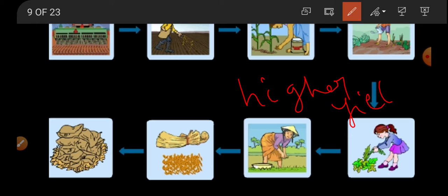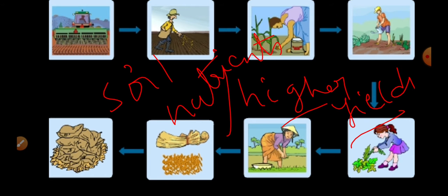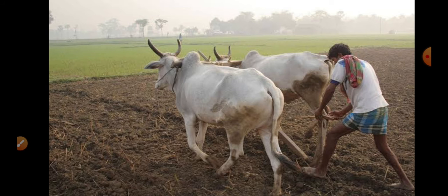Proper maintenance of soil nutrients and following all these steps systematically will help achieve good yield while maintaining soil nutrients for the next crop. Let us start with the first step in crop production — preparation of soil. Why should we prepare the soil? Soil anchors the roots of plants, provides nutrients and water, and even provides oxygen for the roots.